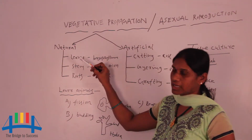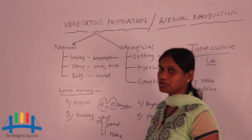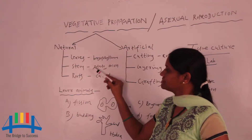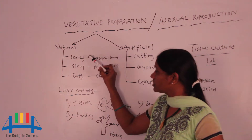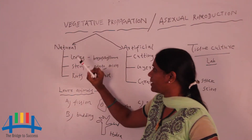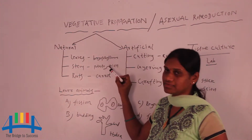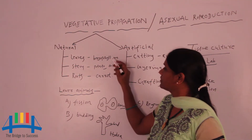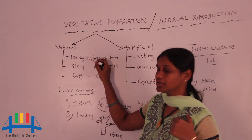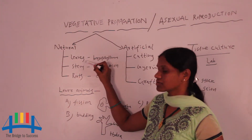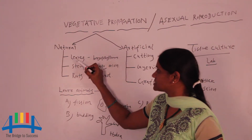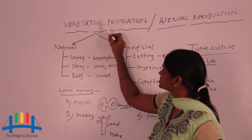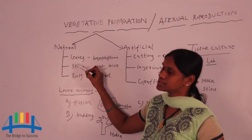Natural vegetative propagation occurs naturally through leaves, stem, and roots. We can get new plants in a natural way through leaves. For example, bryophyllum — in bryophyllum, the leaves produce new small plants. This is one example of natural vegetative propagation through leaves.